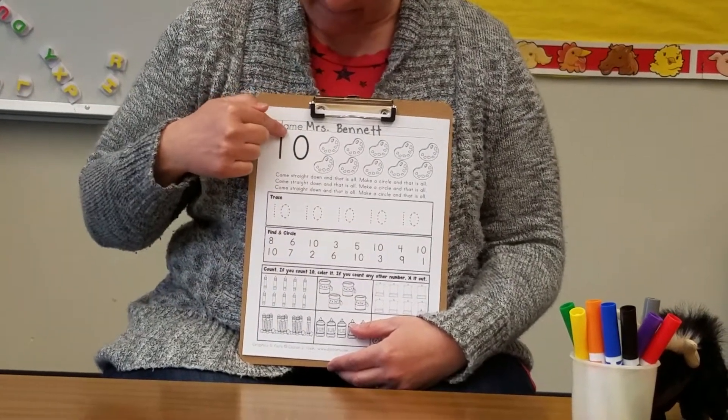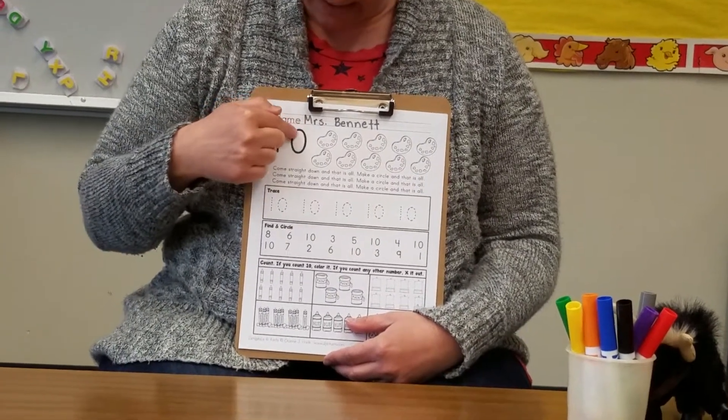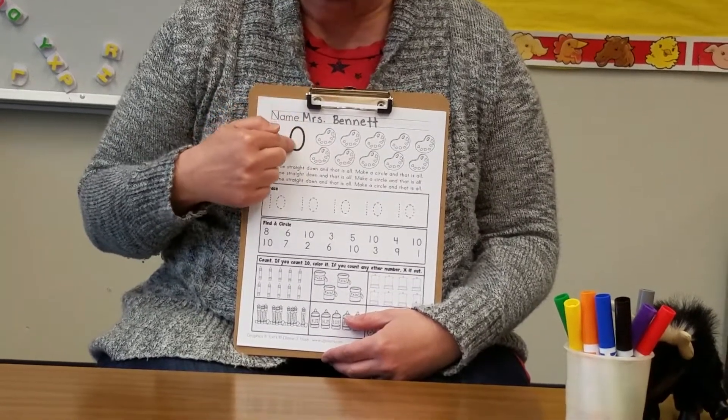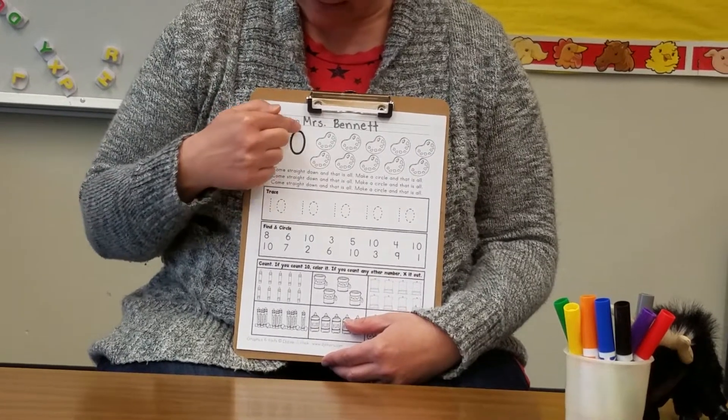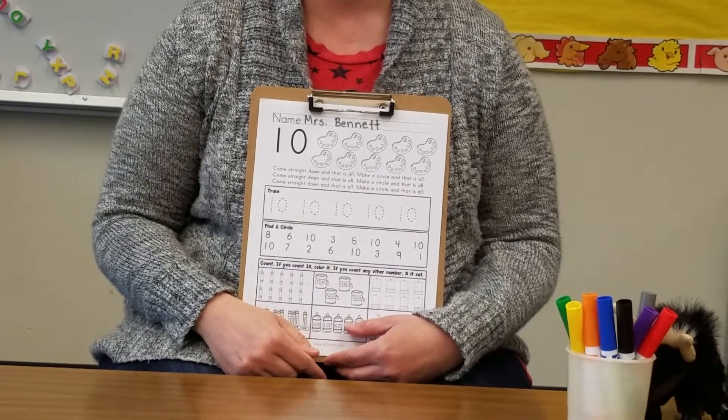So here's how we do this. Come straight down and that is all. Make a circle and that is all. Come straight down and that is all. Make a circle and that is all to make the number 10.